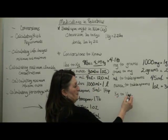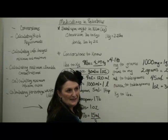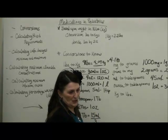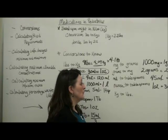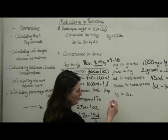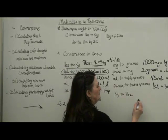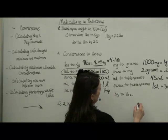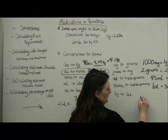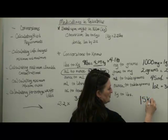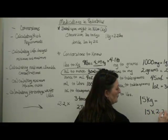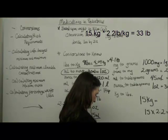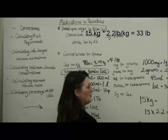And kilograms to pounds. When you will need to do this is when you admit your patient, and we weigh the patient in kilos, and the parents want to know, how much does my baby weigh in pounds? We actually are going to, instead of divide by 2.2, we're going to multiply. So, if I have a 15 kilo child, I will tell the parents that their child weighs 33 pounds.